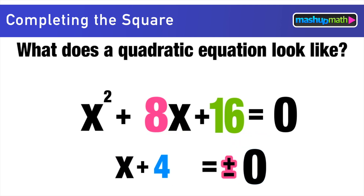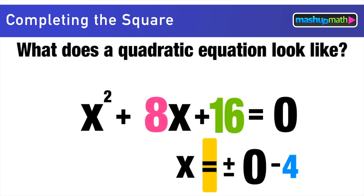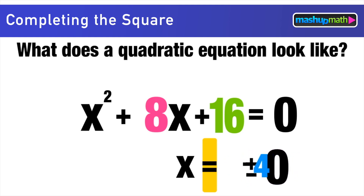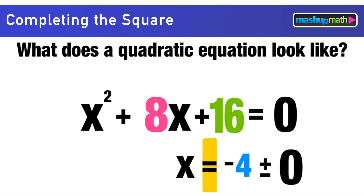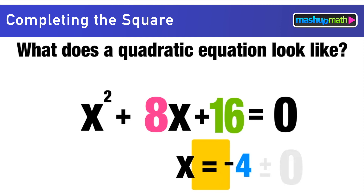On the right side, the square root of 0 is 0, so we write ±0. That plus or minus is very important when evaluating these square roots. Subtracting 4 from both sides gives x by itself. Since -4 + 0 = -4 and -4 - 0 = -4, we have one solution: x = -4.